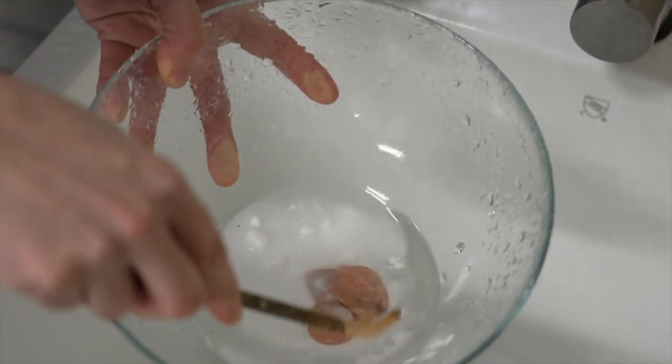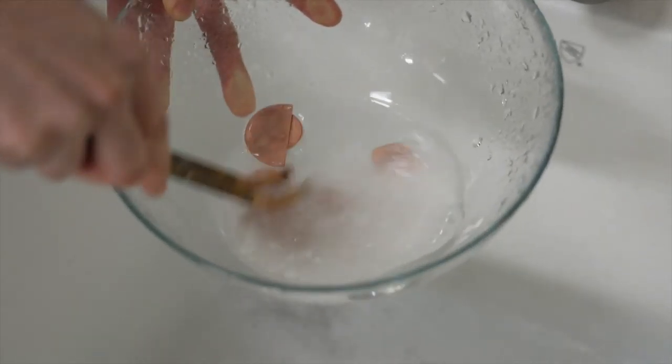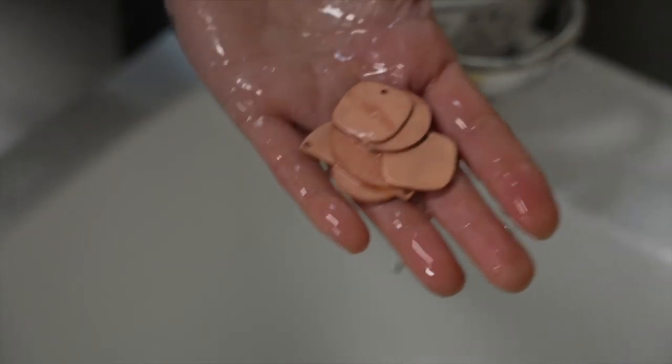Out of the pickle pot, the pieces are rinsed in water, then cleaned in a water and baking soda mixture to neutralize the acid. The pieces are dried and ready to be stamped.